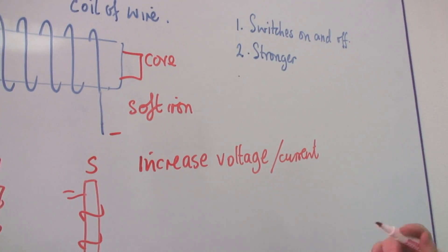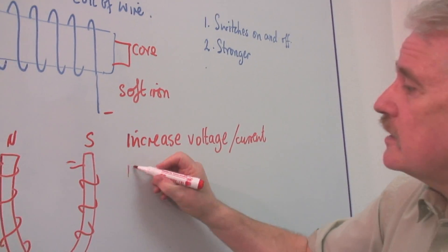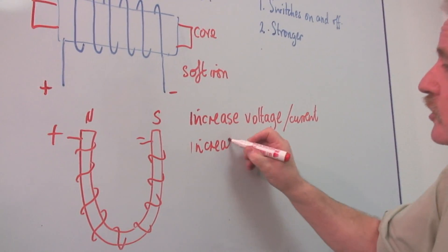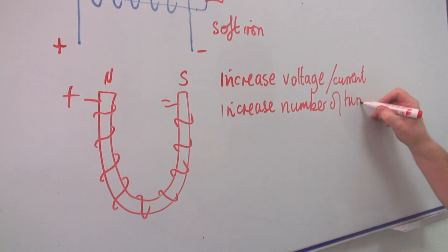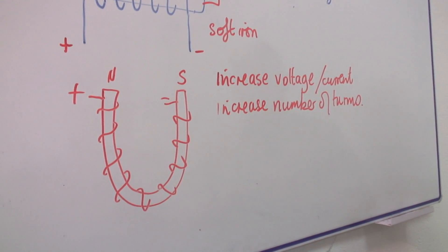Or you can increase the number of turns of wire. So both of these things will make your magnet stronger.